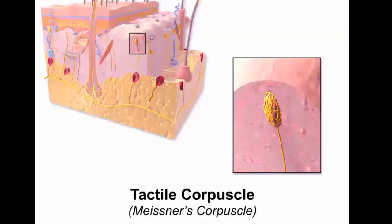The next accessory organ is this tiny little yellow ball found in the dermal papillae layer of the dermis. It is called the tactile corpuscle, or the Meissner corpuscle. These are little sensory receptors that respond to light touch or changes in texture, like comparing the feeling of velvet to sandpaper.